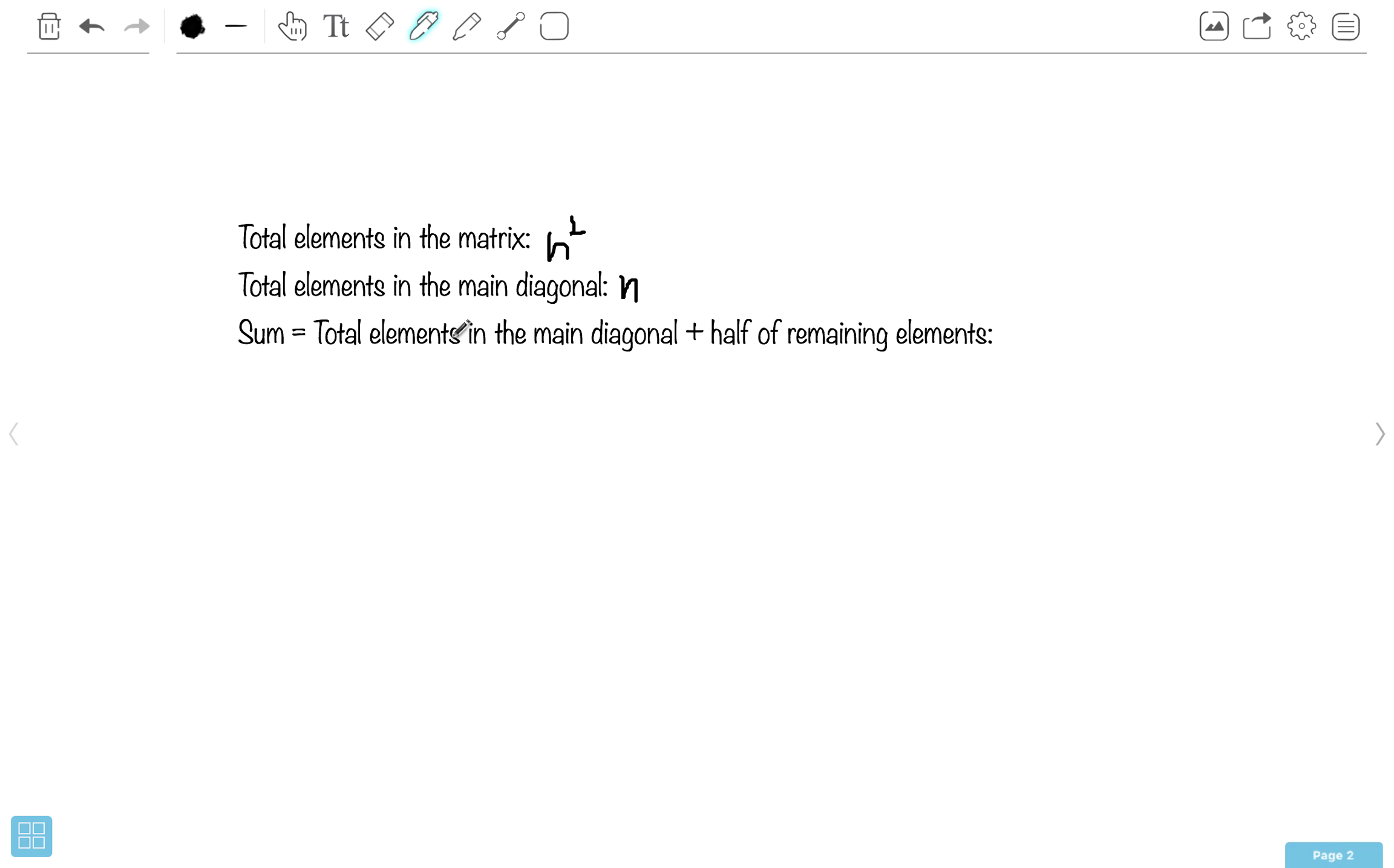So then we add this number to this number, and basic algebra will tell you that we get 2n plus n squared minus n.